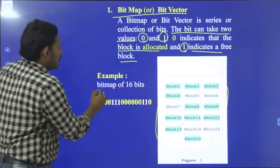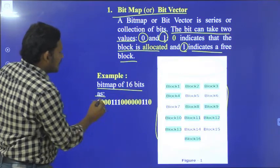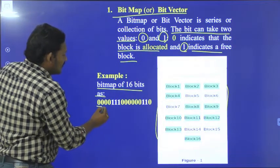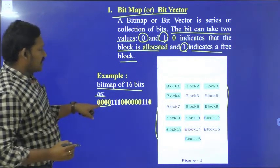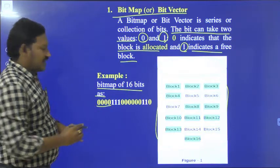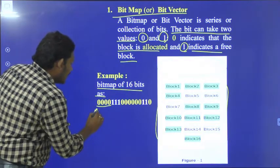If you see this example, a bitmap of 16 bits is represented like this. The first 4 bits are represented with zeros, means they are allocated.